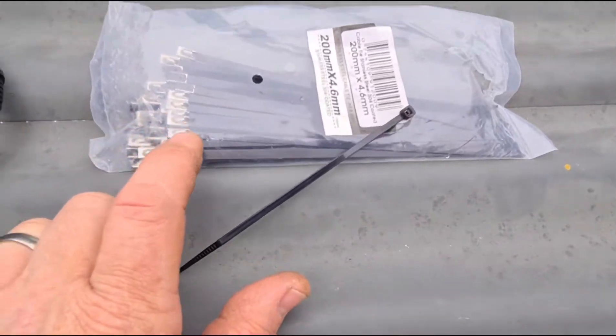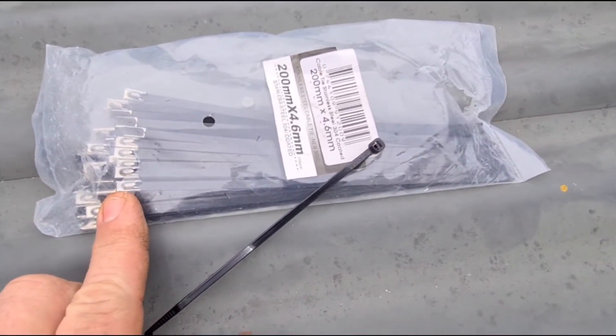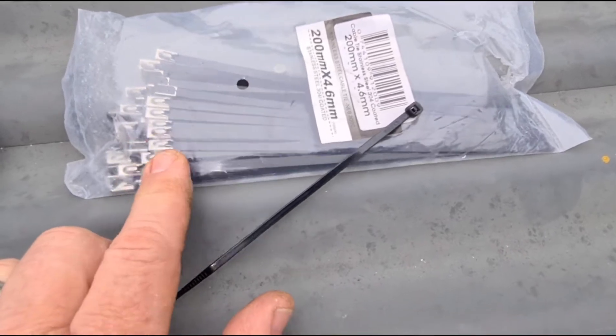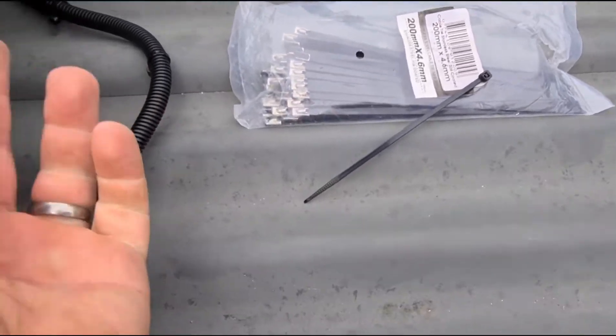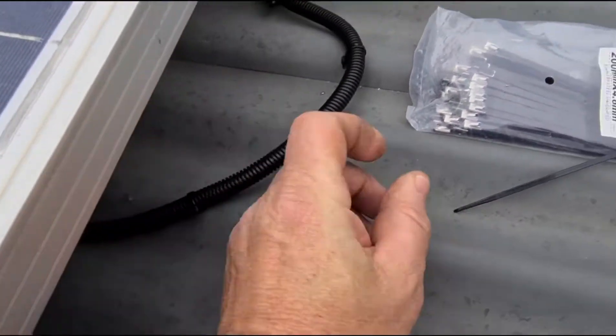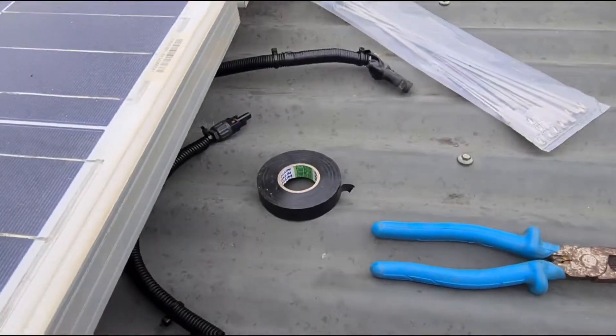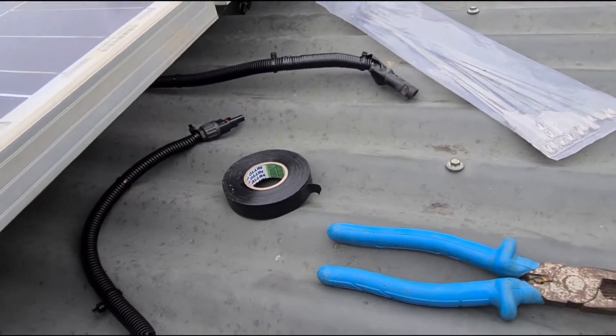I got these from MC4. They're to zip tie these up to the rails and then you've got to put a boot over the top of the two connectors.